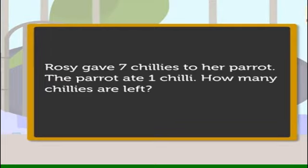First, we read the story. What information does it give? Rosie gave seven chilies to her parrot. The parrot ate one chili. Let us see what we have to find out. How many chilies are left?